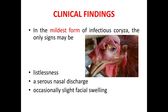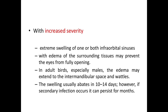Now let's see the clinical findings of Infectious Coryza in chickens. In the mildest form, signs may be listlessness, a serous nasal discharge, and occasionally slight facial swelling. You can see a picture of slight facial swelling in a chicken here. But with increased severity, there can be extreme swelling of one or both infraorbital sinuses, with edema of the surrounding tissues that may prevent the eyes from fully opening.